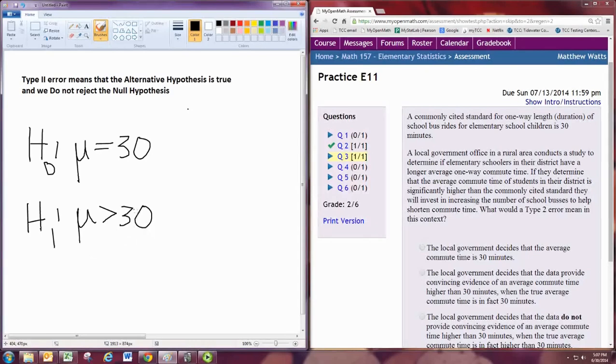So, a type 2 error would mean that, in fact, this was the case, that the average commute time for this local area was greater than 30 minutes, and yet, through their hypothesis test, they failed to reject the null hypothesis, so they would not have significant evidence to actually come to this conclusion.